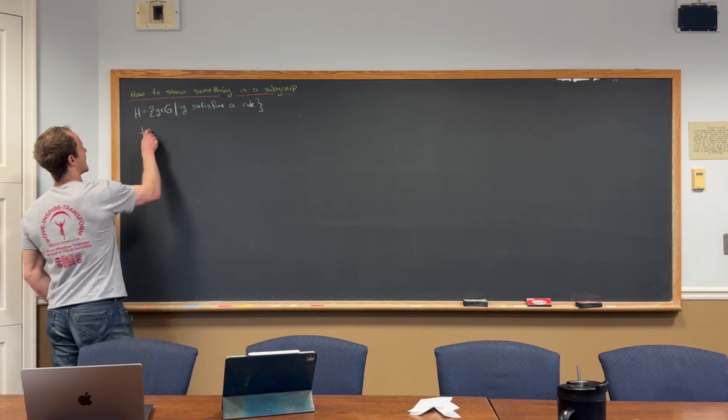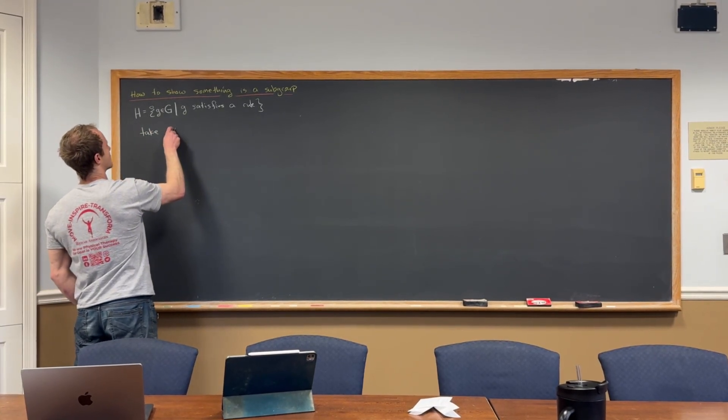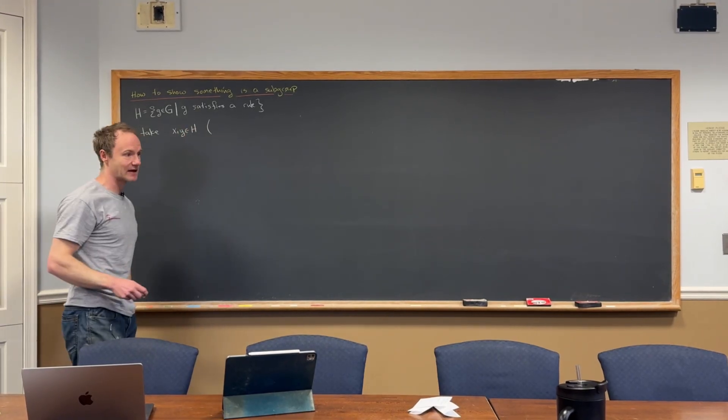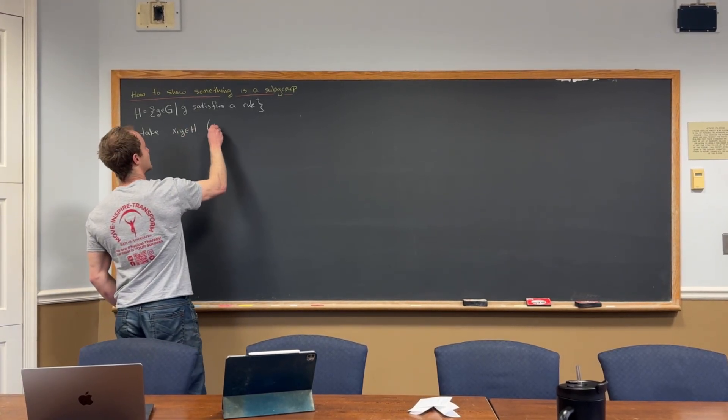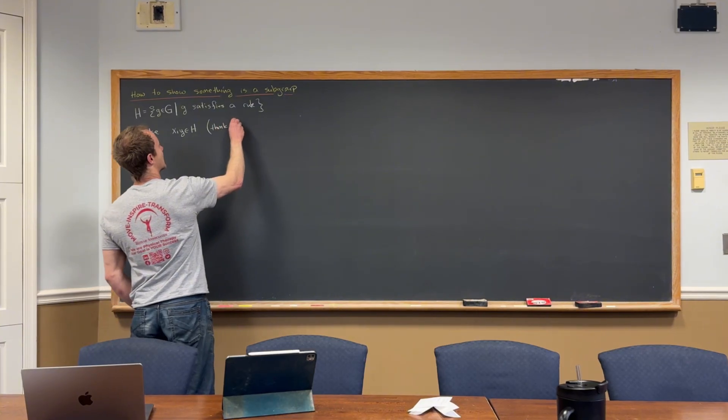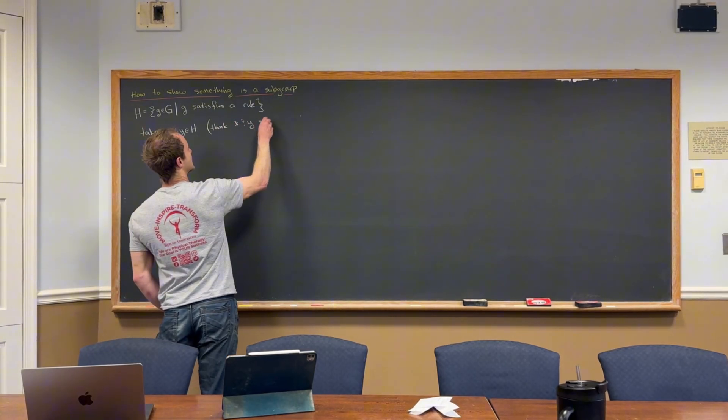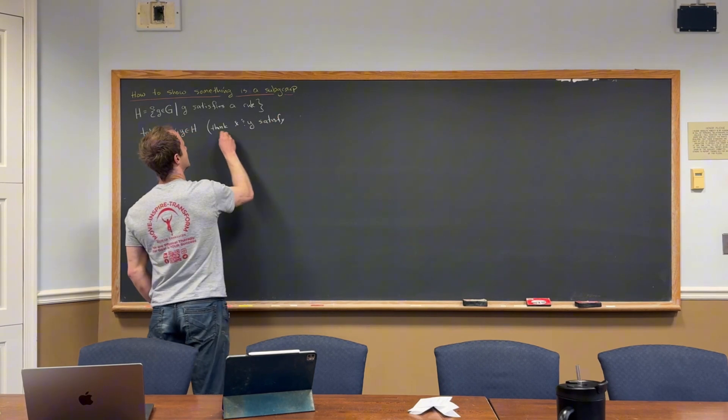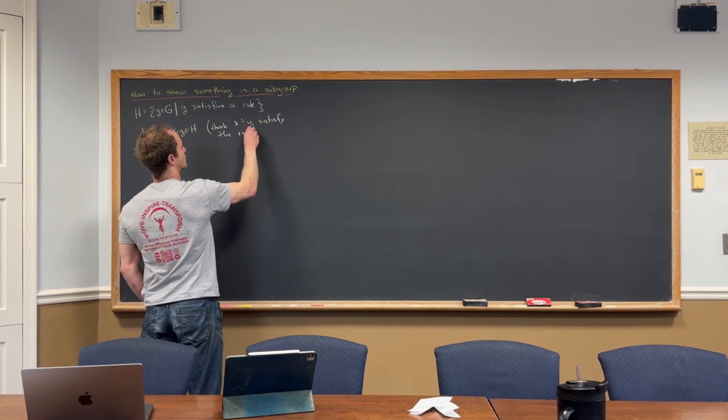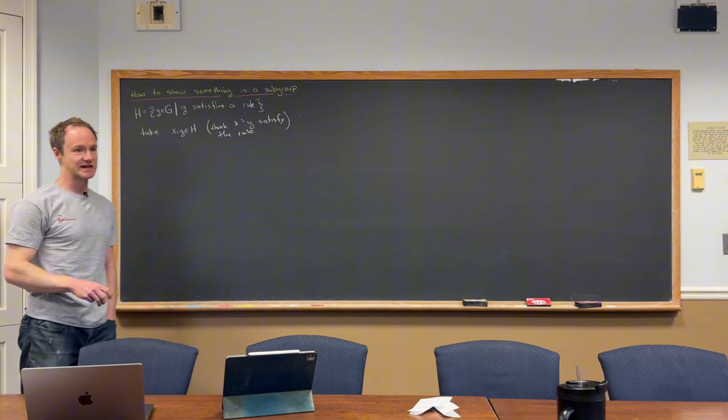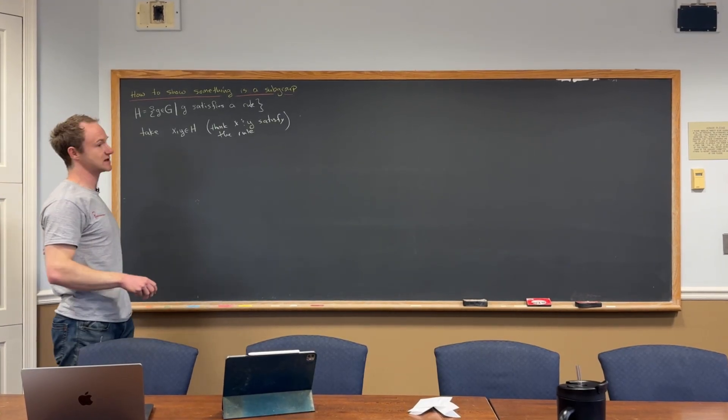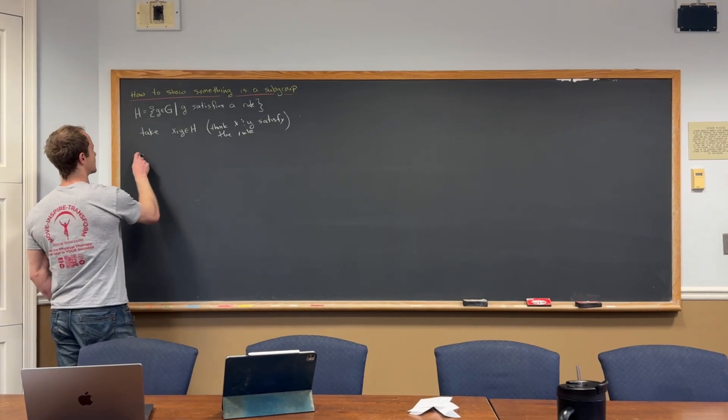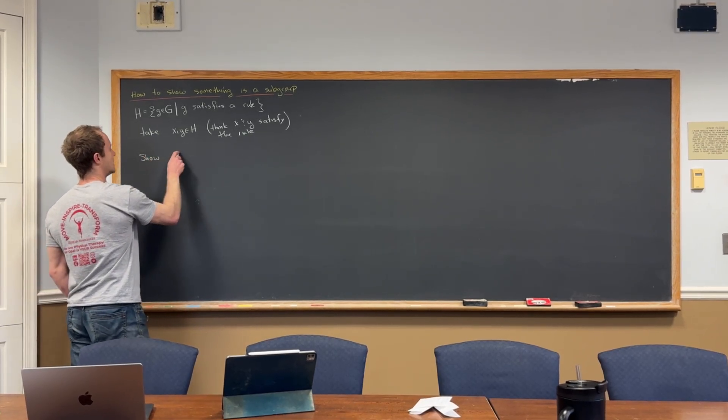You could use the definition of a subgroup, but here's the idea. So you take maybe we'll call it x and y in H. And just in the back of your mind, you want to think that x and y satisfy whatever rule that's defining the subgroup. Because that's what it means to be in that set. To be in that set means you satisfy the rule.